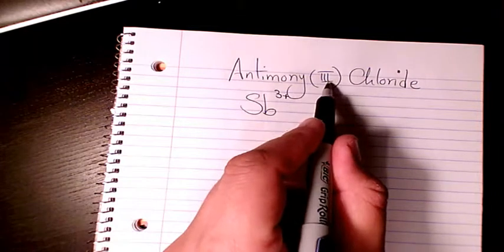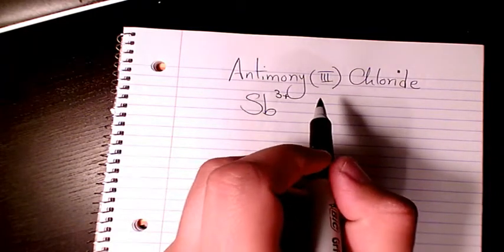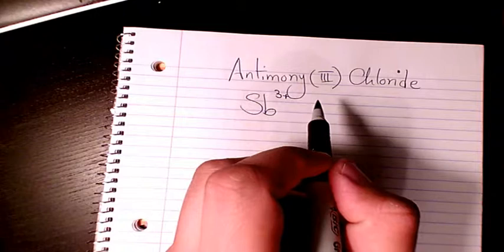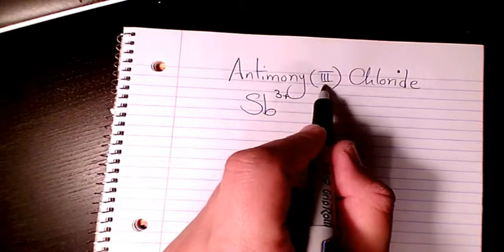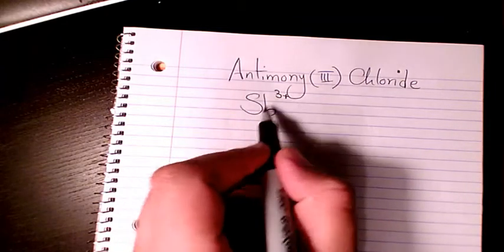Why we have this? It means that we have more than one oxidation state or more than one capacity, so we should write it in the bracket in front of the name. So it's 3+.